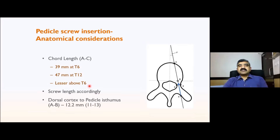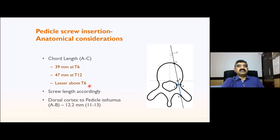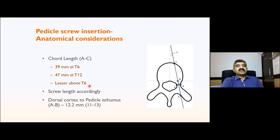The cord length is shortest at T6, around 40 millimeters, and longest at T12, around 47 millimeters. The longest screw in the thoracic spine will be 45 mm at T12, and you can use 40 mm almost till T1-T2. If you are not achieving a 30-degree angulation at T1-T2, you may end up using only 30 to 35 mm screws. The screw length has to be calculated accordingly.